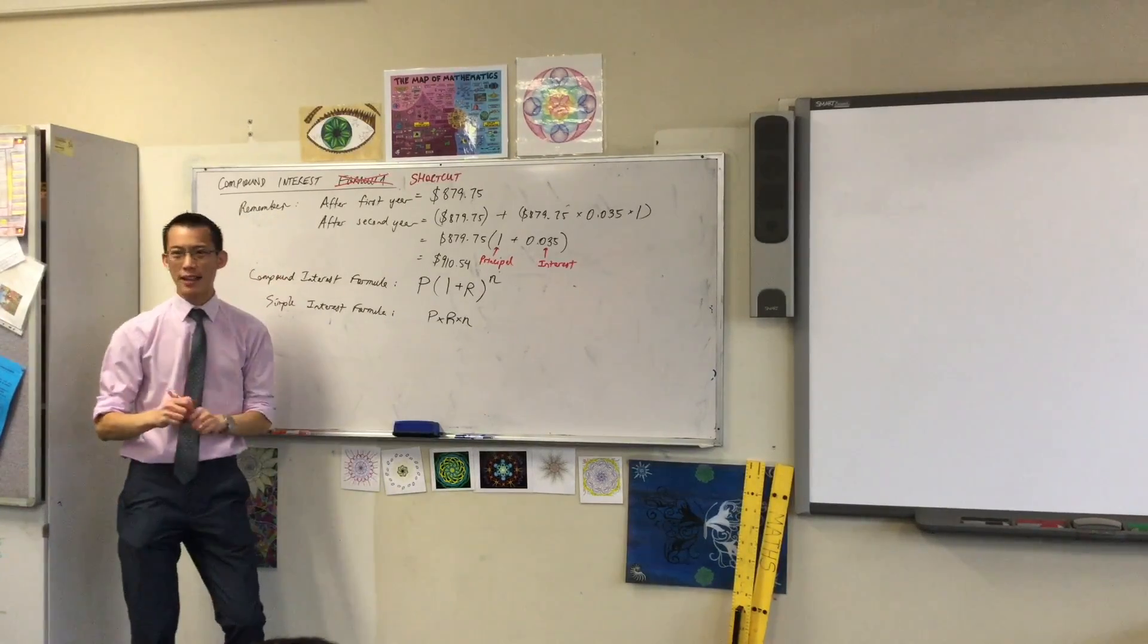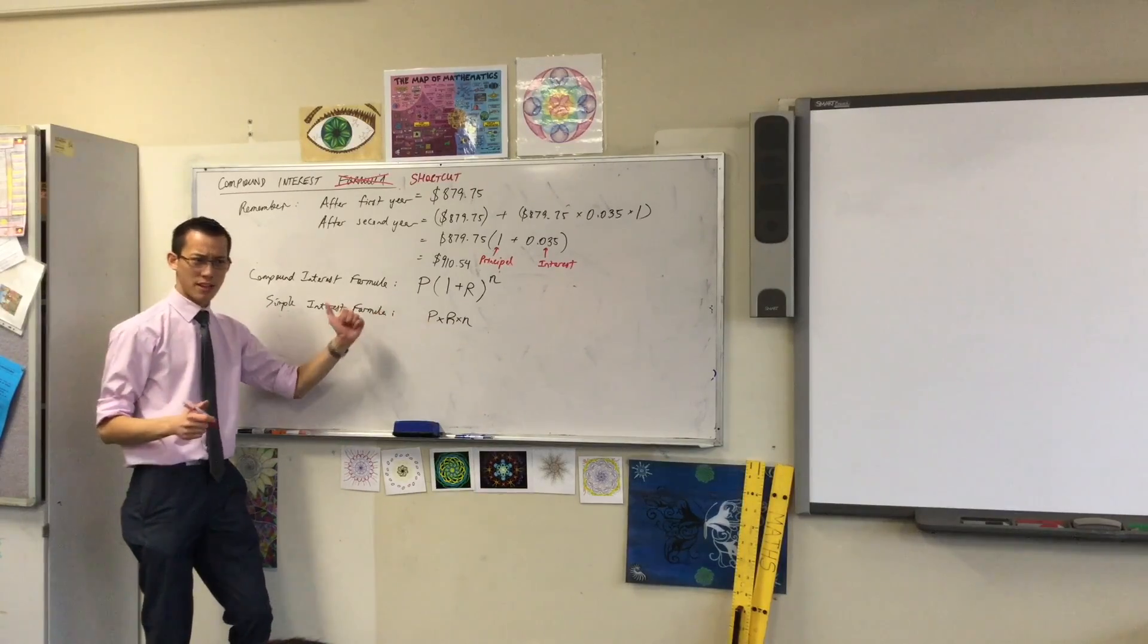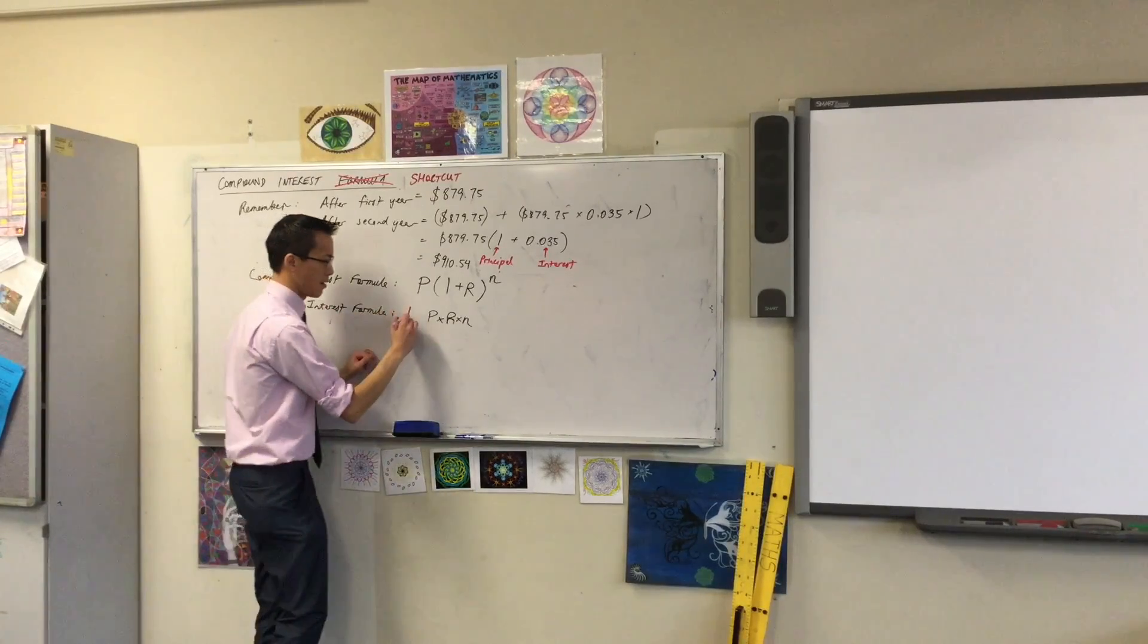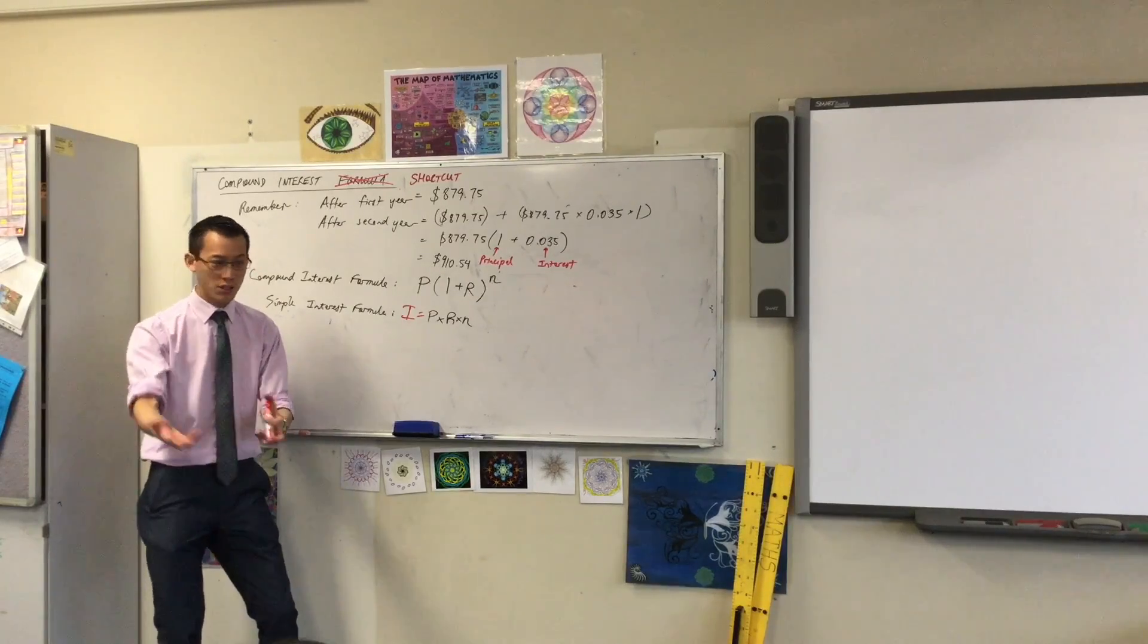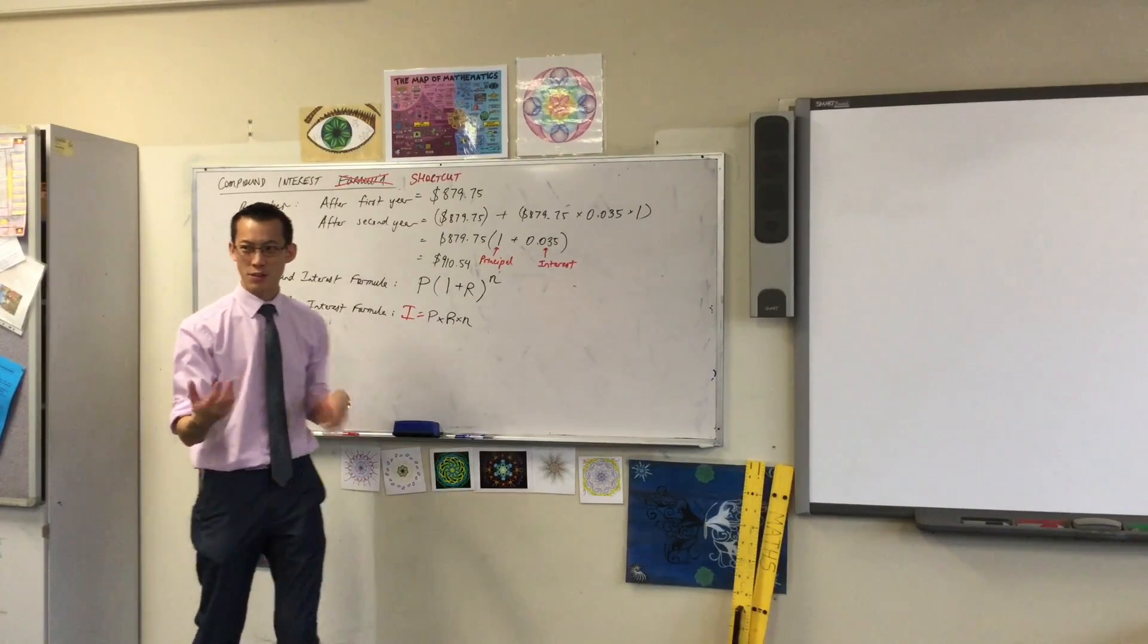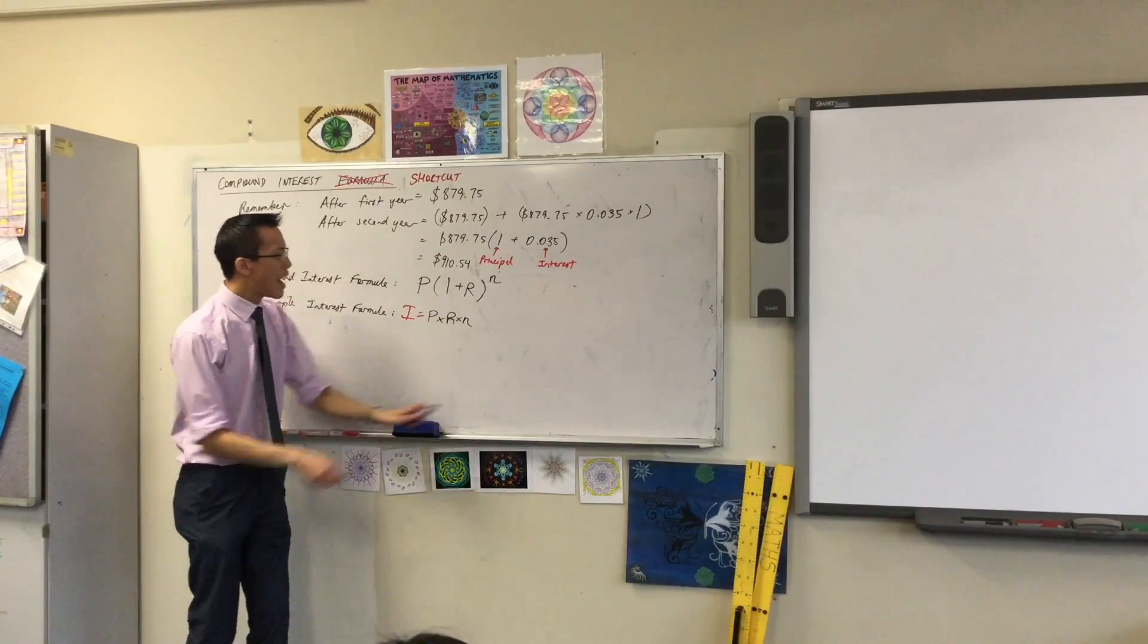But, here's the difference I want to highlight. This is actually not the full simple interest formula, is it? There's something on the other side, I'll take the side. It's interest, right? So, the question I asked you at the beginning, how much interest is $850 earned, yadda yadda yadda. This formula just hands it to you, right?